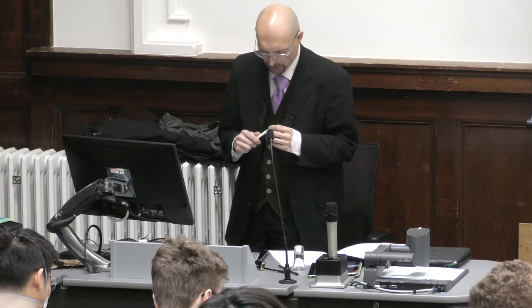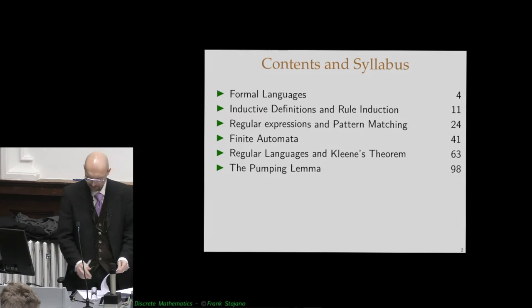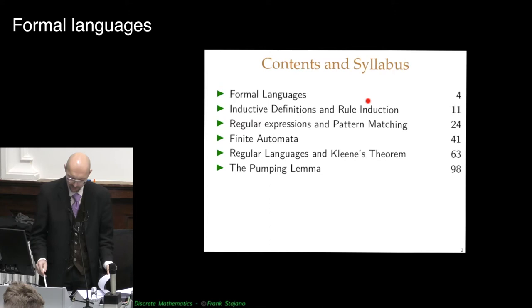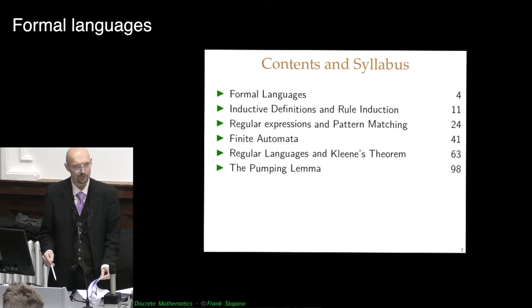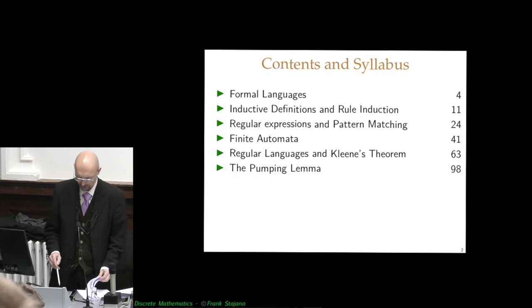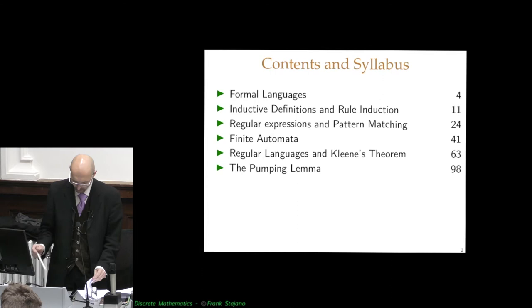In this final part of the discrete maths course, we are going to look at the type of maths that computer scientists do as opposed to the maths that mathematicians do. This is what we have on the menu, and this all revolves around the idea of formal languages and ways to reason about formal languages, ways to recognize formal languages with machines called finite automata, properties of formal languages, and so on.